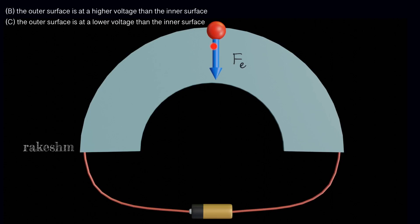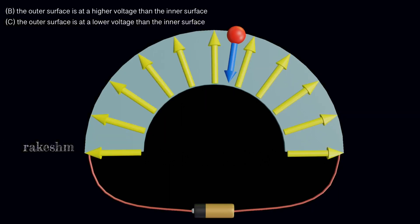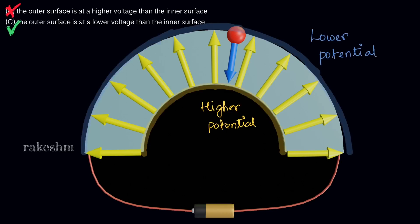If the force on the electron is directed inward, then the electric field must be in the opposite direction — radially outward. Since the electron moves in a circular path, the force must be radially inwards and the field radially outwards. Therefore the inner surface is at higher potential and the outer surface at lower potential. Option C is correct.